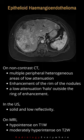On non-contrast CT, the lesions are seen as multiple peripheral heterogeneous areas of low attenuation. There is enhancement of the rim of the nodules, with a low attenuation halo outside the ring of enhancement.